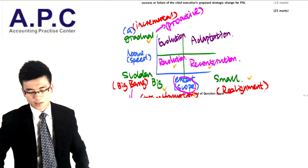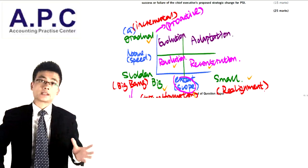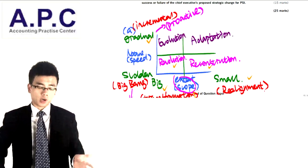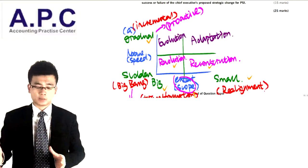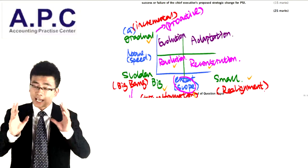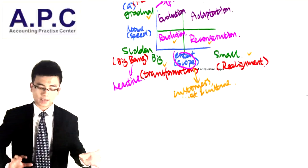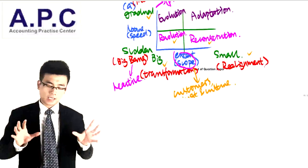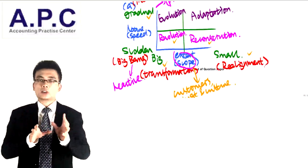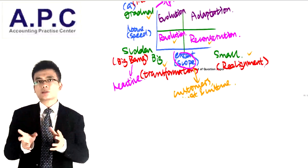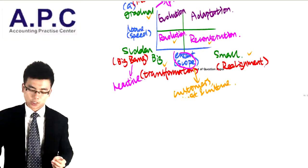Evolution involves changes in the customer base, management, or culture within the businesses as a result of changes in the processes within the company. Adaptation, on the other hand, does not change the existing customers, management, and culture within the businesses — it is simply a change in process in order to improve it. That's why it is gradual and also a small change.